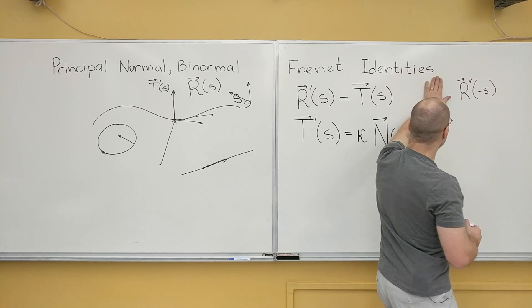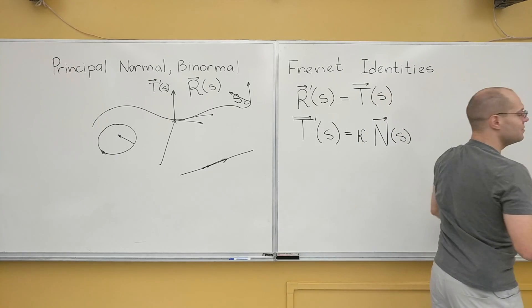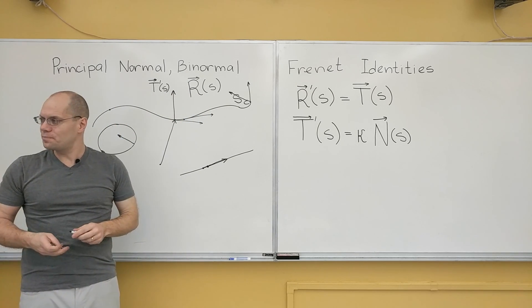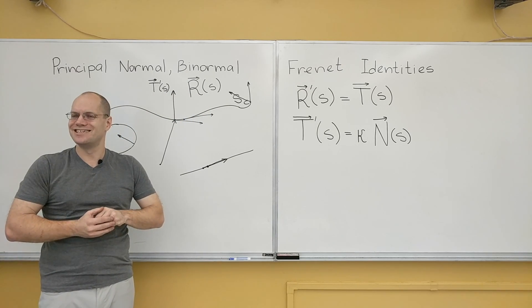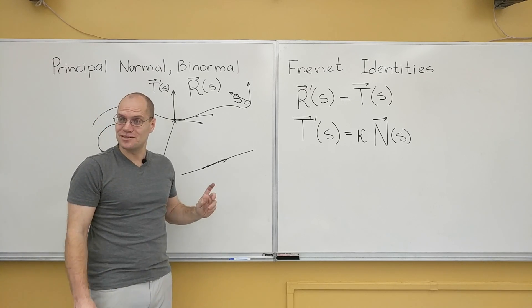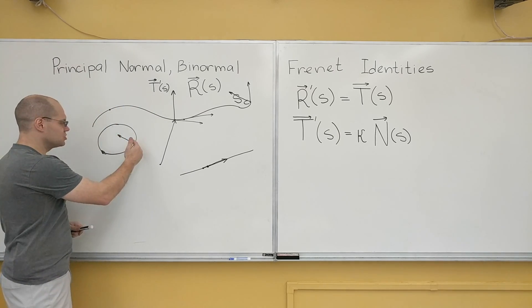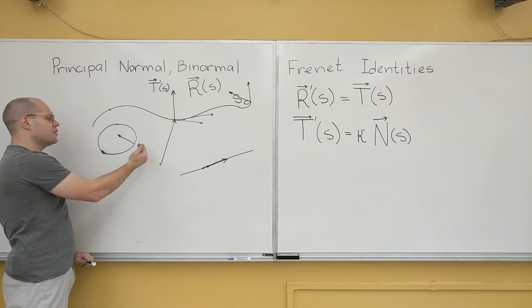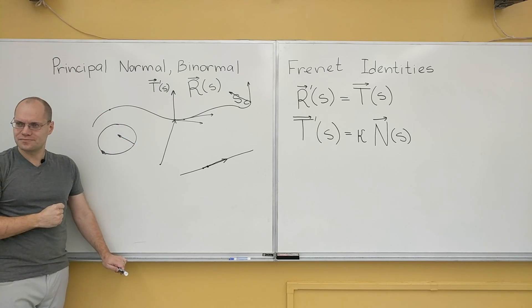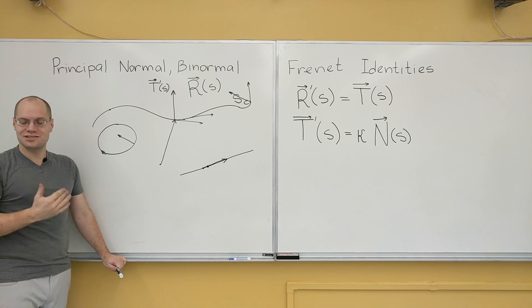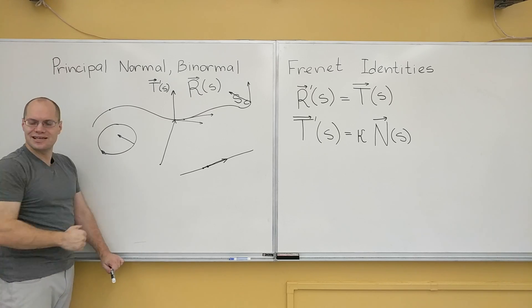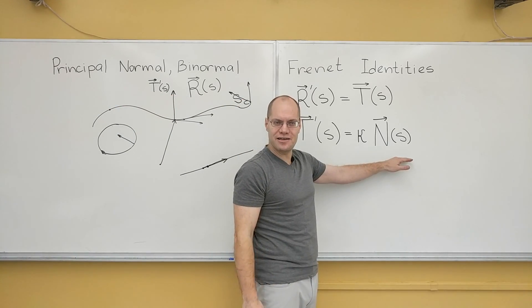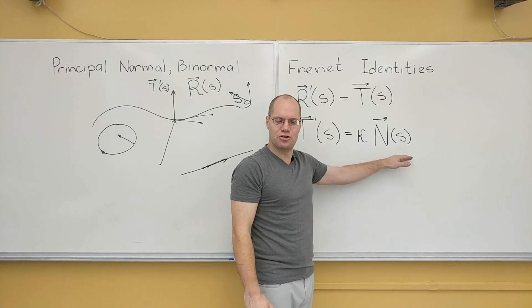Okay, so that's not surprising. So the principal normal always points in the same direction regardless of which way your parametrization. Parametrization, there you go. Parametrization points, right? And it always points what you would call inward. So whichever way the curve curves, that's the way it points. And the corresponding intuition is acceleration. Points inward. Okay, and so that's an important takeaway. That's a great property of the principal normal.